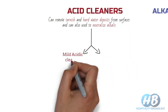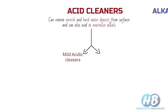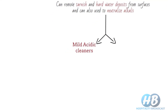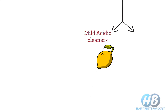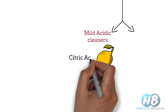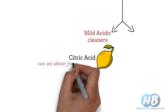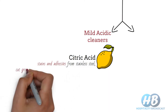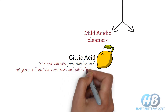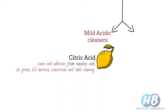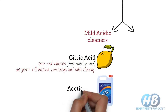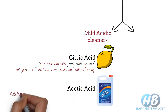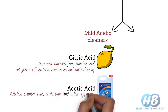Mild acidic cleaners have less acidic strength and are used for minor cleaning like hard water deposits and mild rust stains. For example, lemon juice, which contains citric acid, can remove stains and adhesive from stainless steel. It can also cut grease, kill bacteria, and is used for countertop and table cleaning. It can also descale taps and shower doors. A second example is vinegar, which has acetic acid and effectively cleans kitchen countertops, stovetops, and other appliances.